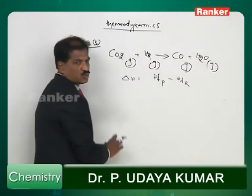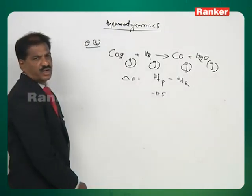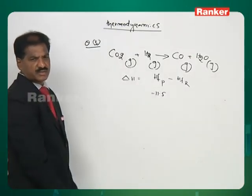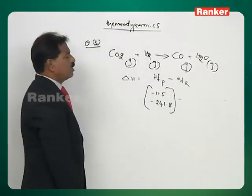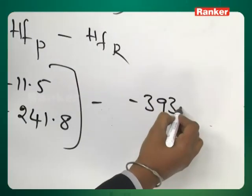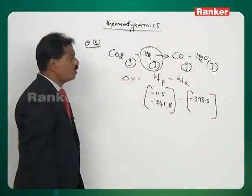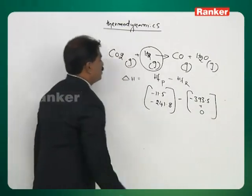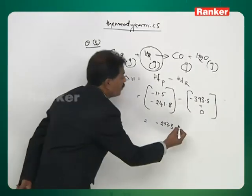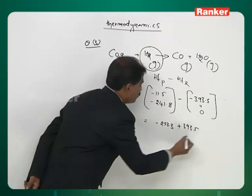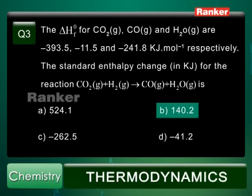Products are CO and H2O. Enthalpy of formation of CO is minus 11.5 and for water is minus 241.8. For CO2 it is minus 393.5, and enthalpy of formation of H2 (an element) is 0. Total enthalpy change of products is minus 253.3, minus of minus 393.5, giving plus 140.2 kilojoules per mole. Answer is B.